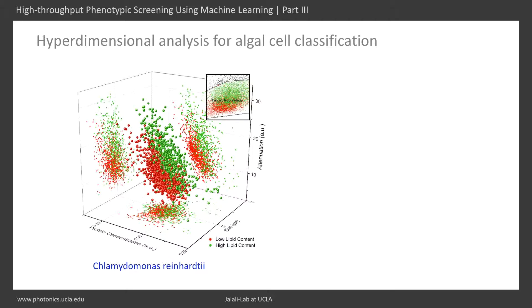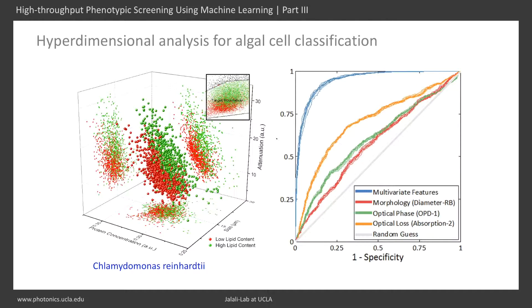Here is another example: classification of algae cells, Chlamydomonas, by TSQPI based on their lipid content. The inset shows conventional label-free flow cytometry using forward scattering and side scattering, which is not enough to distinguish the difference between high-lipid and low-lipid content algae cells. TSQPI is much more efficient in separating the two algae populations.